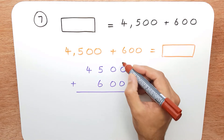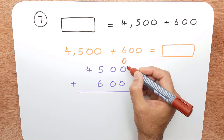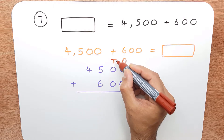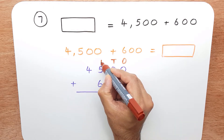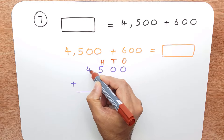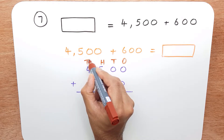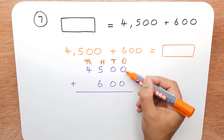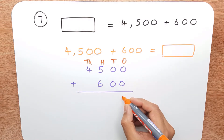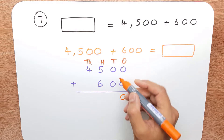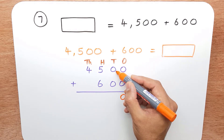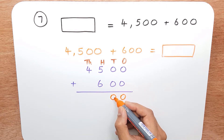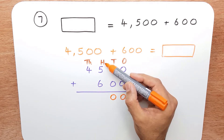This here is the ones column or the units column. This is the tens column. This is the hundreds column. And finally this one here is the thousands column. So let's start: zero add zero is zero. Zero add zero is zero. Now we move on to the hundreds column.